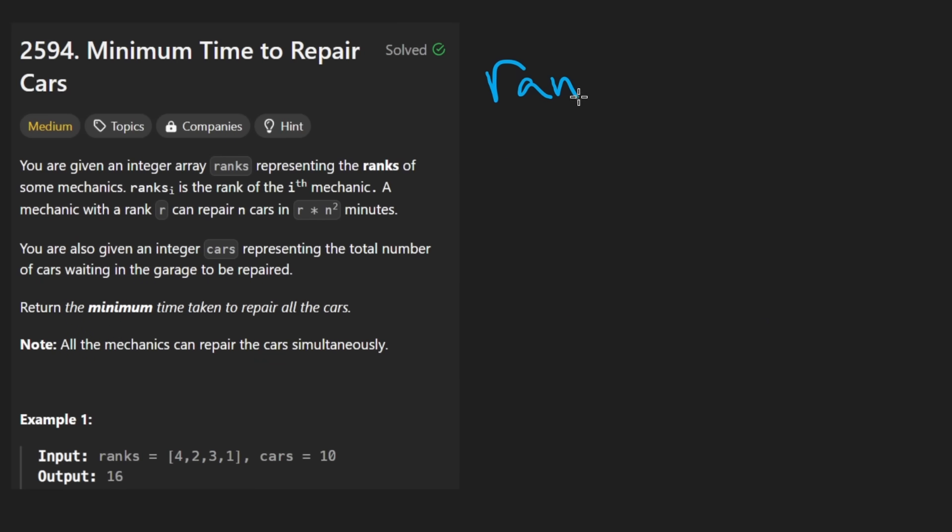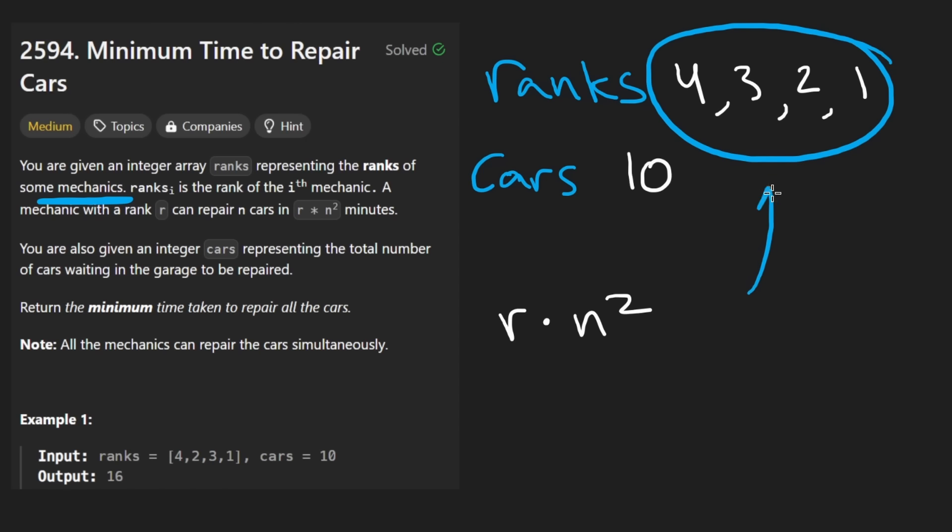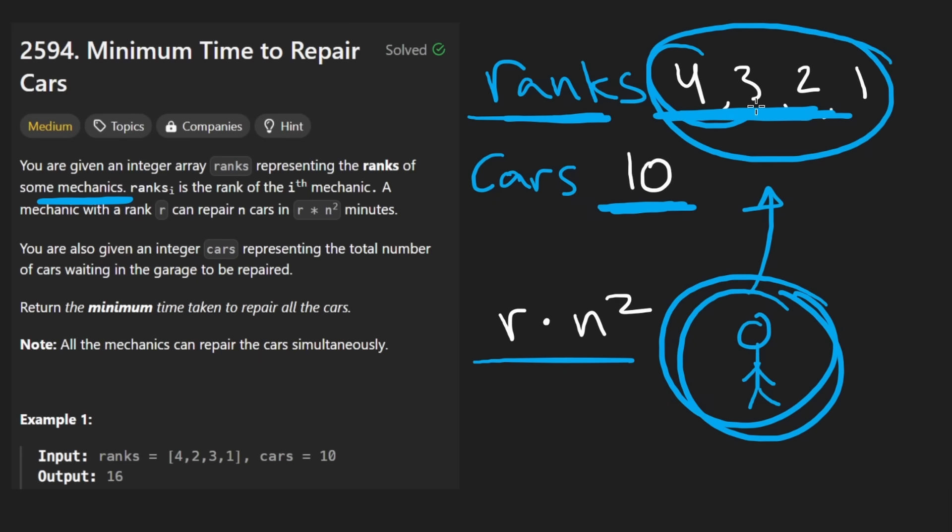The idea here is that we're given a bunch of ranks. And so in this example, I think we just have 4, 3, 2, 1. And we're also given a parameter cars, so that's just going to be a number. In this case, that is going to be 10. What the ranks represent is kind of the opposite of what you would expect. For example, they give us this equation here, and basically the entire problem centers around this equation. If you are decent at math, you should be able to simplify it pretty quickly. If not, it's a little bit tricky, so don't worry too much about it. So we have r times n squared.